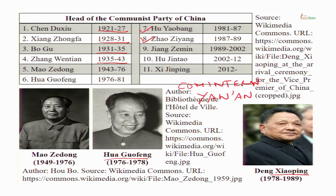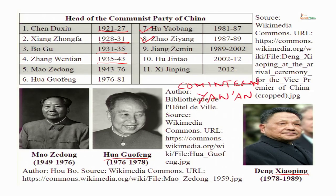Hu Yaobang died in 1989, and again there was protest — people came out grieving his death with demands for political reforms. Zhao Ziyang also showed favour towards the protesters. He went to the students who were protesting and said there was a need for change. This was intolerable to the party elders led by Deng Xiaoping, so they sent the military to crack down on the protesters. The Tiananmen Square massacre of 1989 followed, and Zhao Ziyang was removed from office.